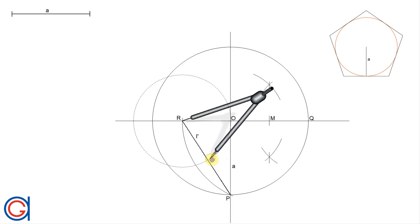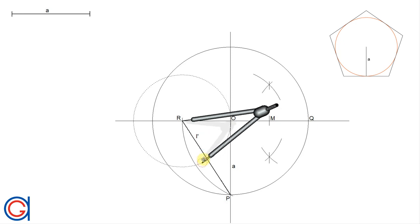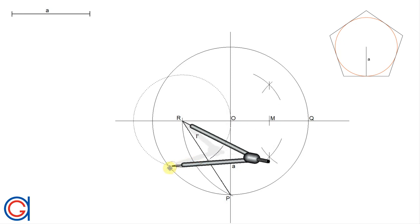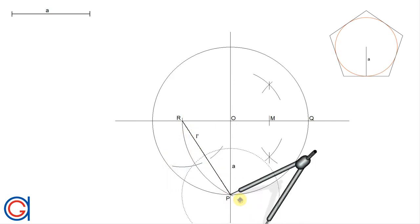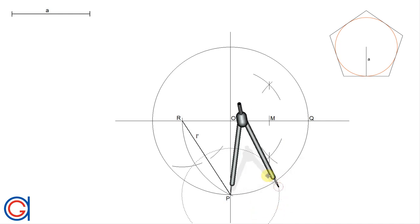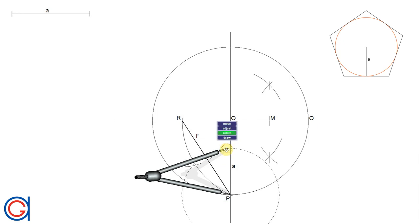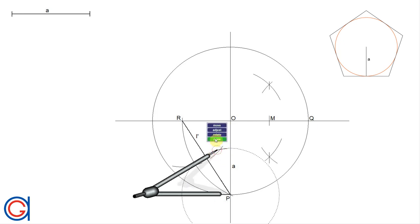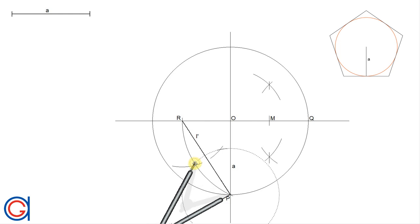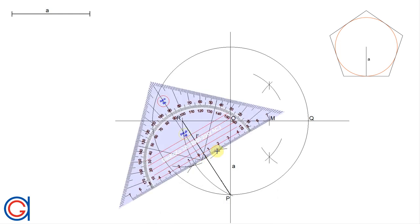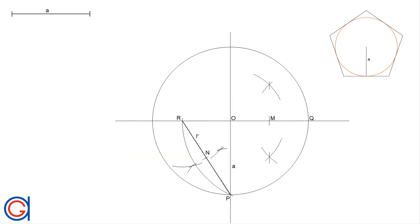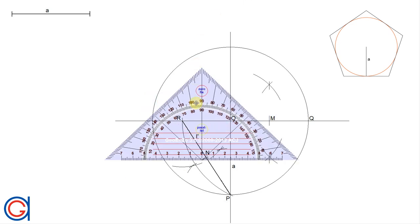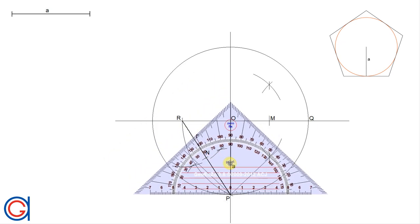Now we calculate the midpoint of line PR by working out its perpendicular bisector. With the compass set on point R and a radius slightly greater than half the length of PR, we scribe an arc above and below the line. With the same radius centered on point P, we scribe another arc intersecting the previous one at two points. Joining these two points, where it cuts line PR gives us the midpoint N of side PR.